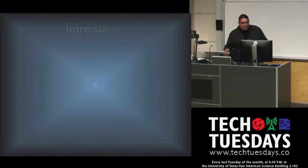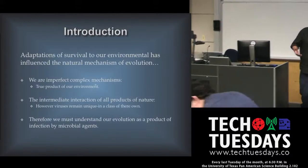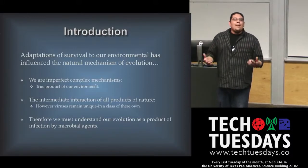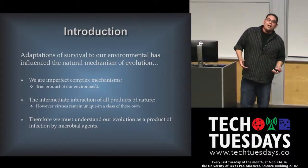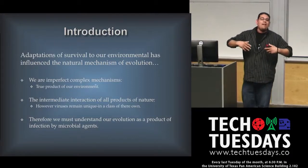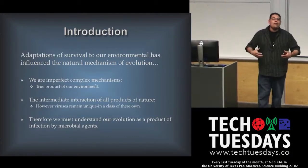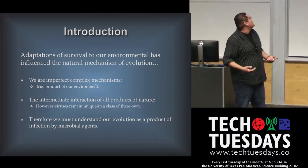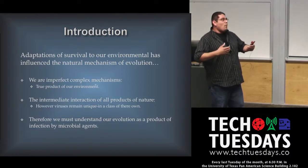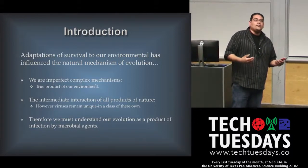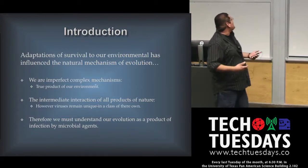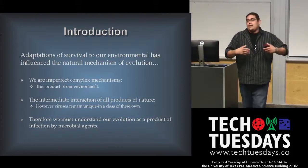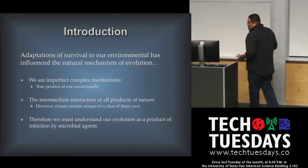We are at the dawn of scientific discovery. We are products of our environment — dynamic, imperfect, complex organisms. We have to consider every entity in our biome to understand where we come from and where we're going. Our genetic structure and evolution all point to why we should study science, why our institutions should grow, why a medical school makes sense. We must understand evolution as a product of infection by microbial agents — immunology, disease, microbiology.